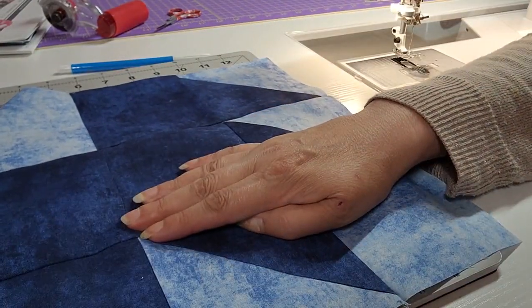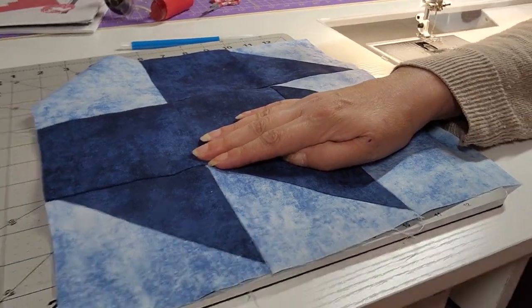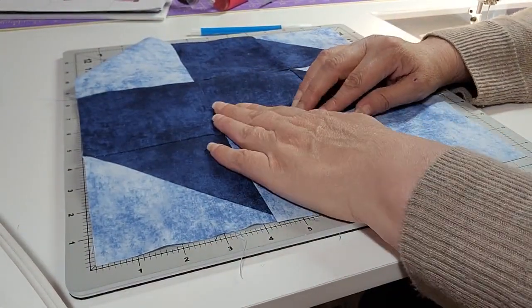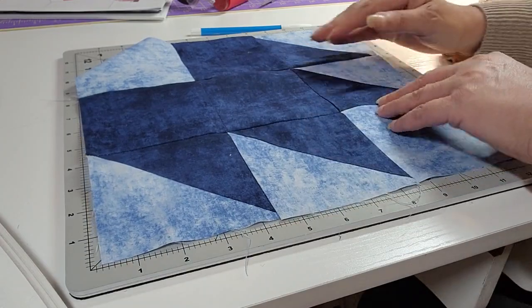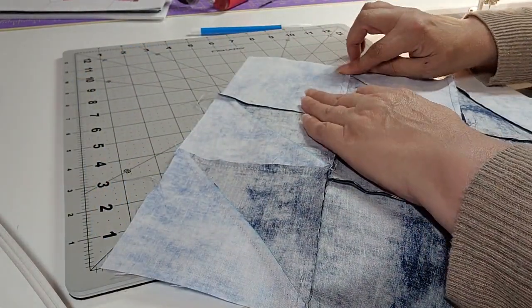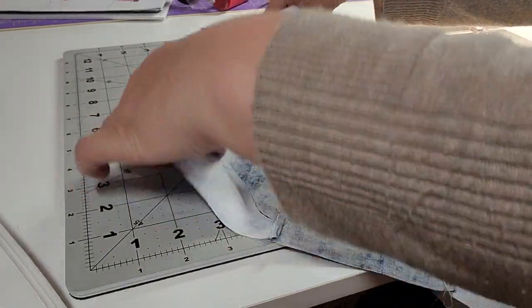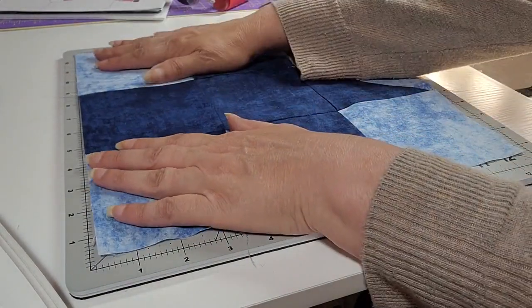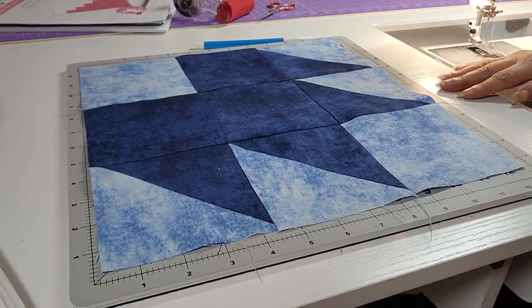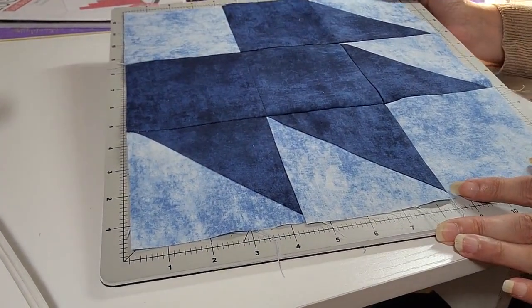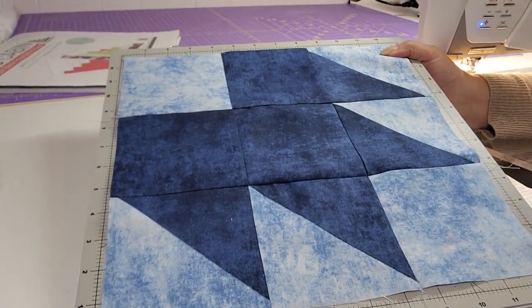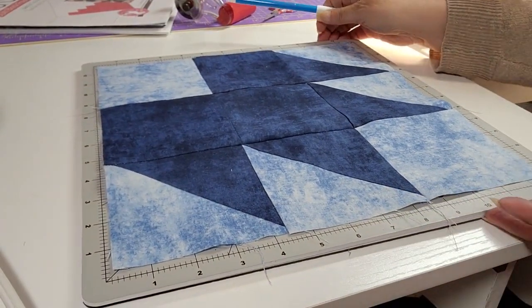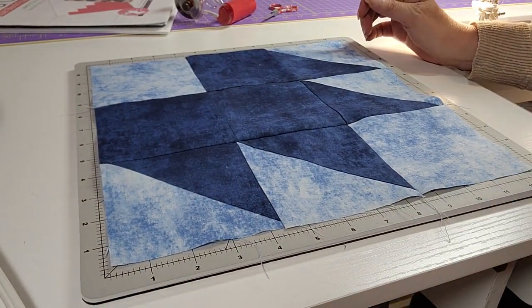Just finger press that open first, and then you'll want to press it with your iron after. And that's your maple leaf. I think that's such a pretty block, even in the blues. Of course, I love blues. So that's our last block for the sampler quilt.